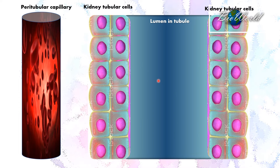The tubules related to blood pH regulation are the distal convoluted tubules and the collecting ducts. On the left and right we have the tubular cells, and the center here is the space or the lumen in which filtrate and urine flow through.